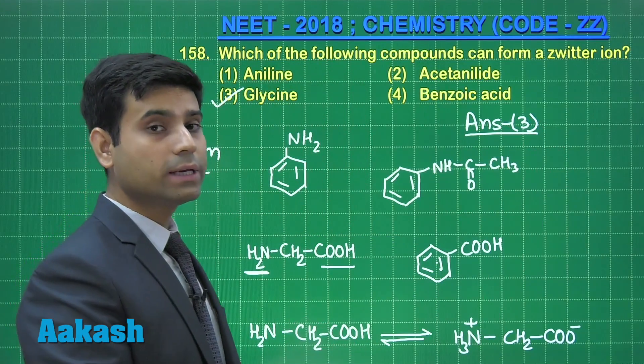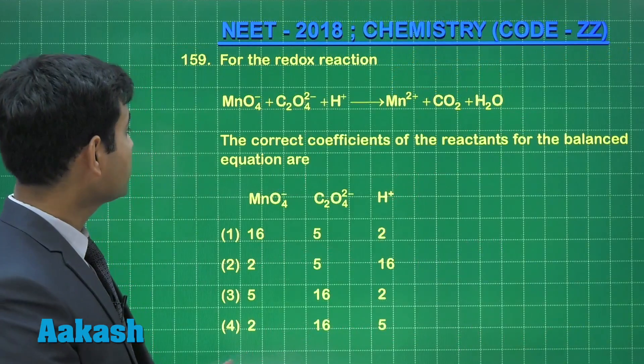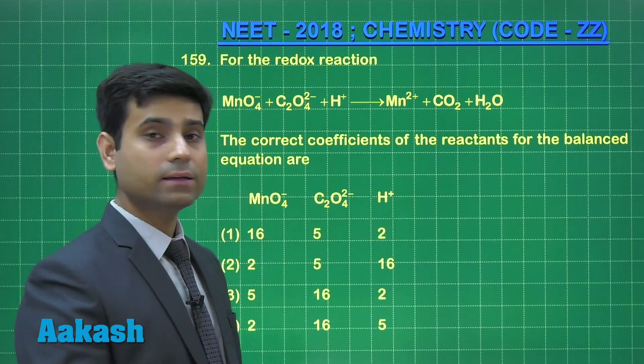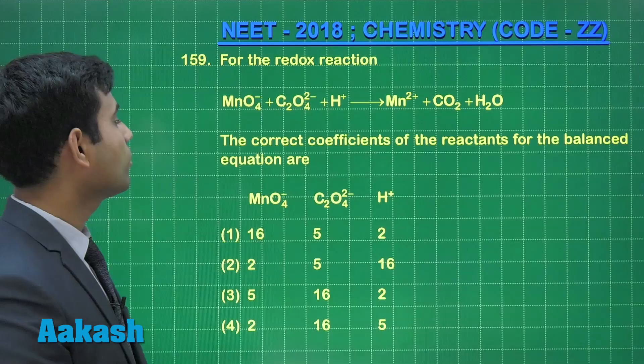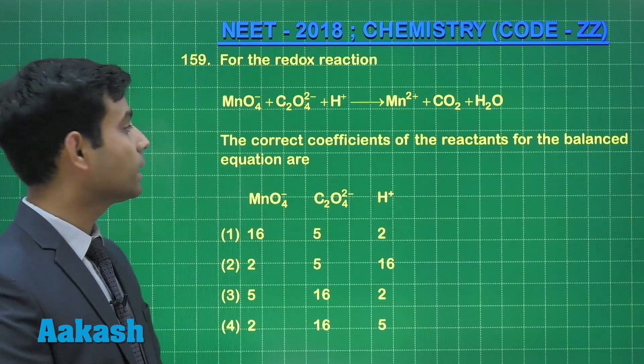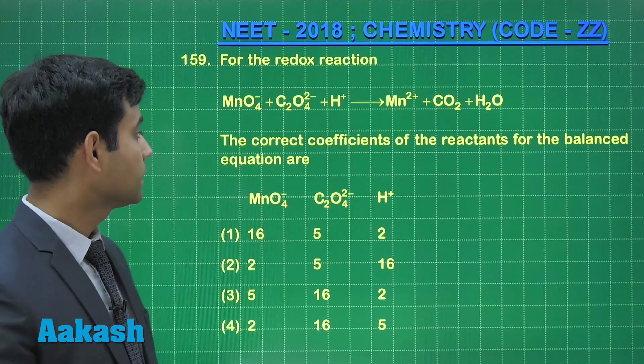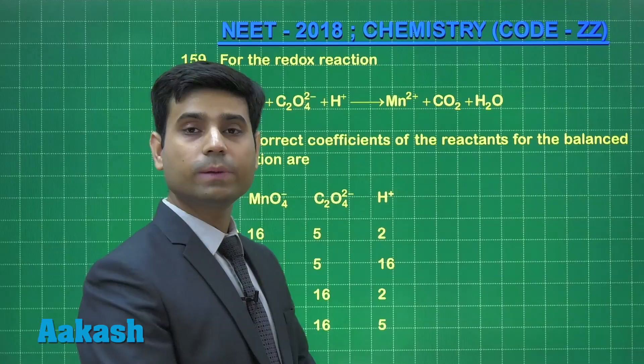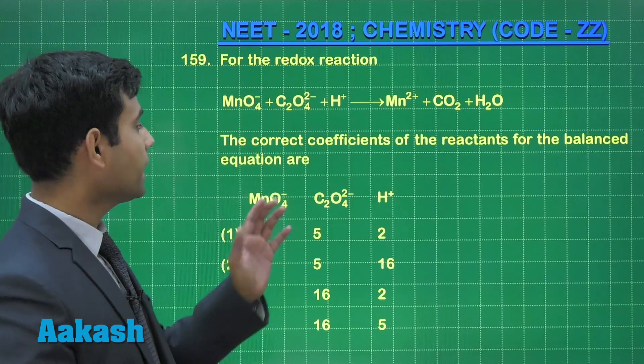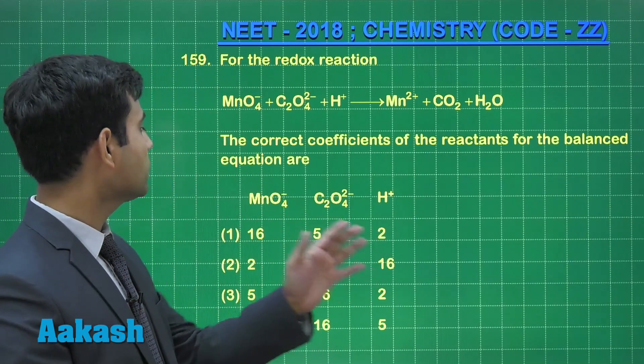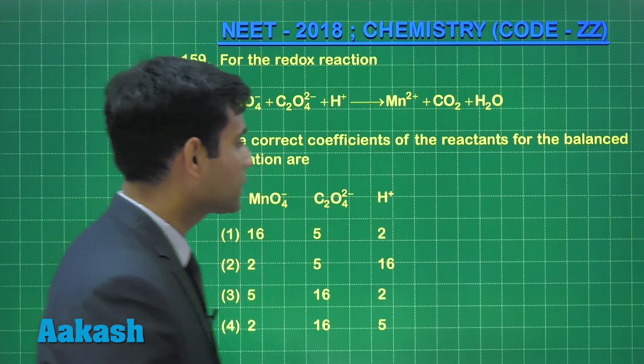Now let's move to the next question. Now let us solve question number 159 which says the redox reaction MnO4 minus plus C2O42 minus plus H plus gives us Mn2 plus plus CO2 plus H2O. The correct coefficients of the reactants for the balanced equation are. These are the options given.